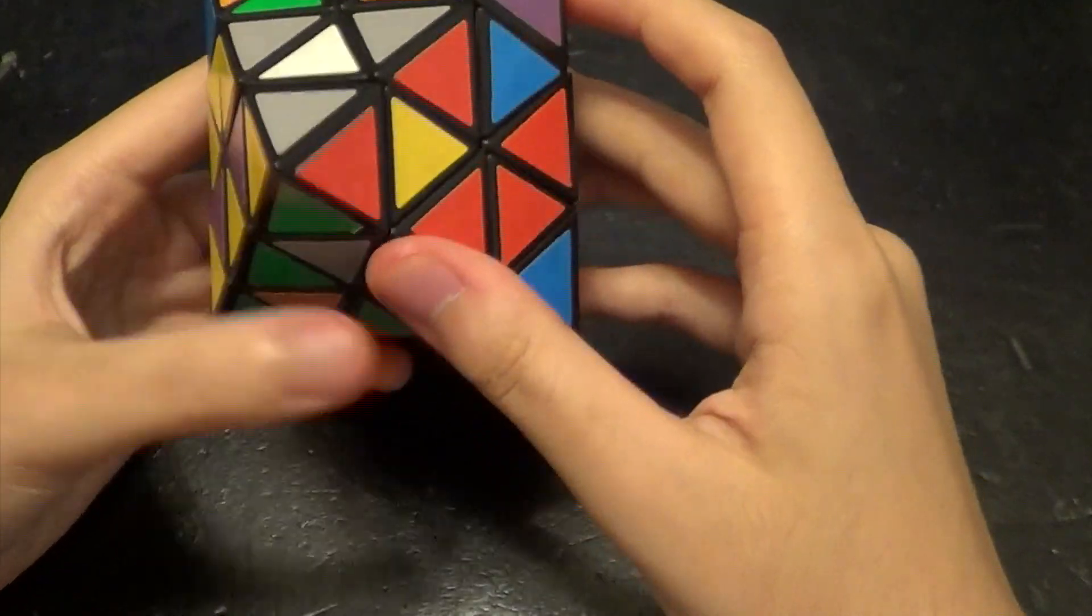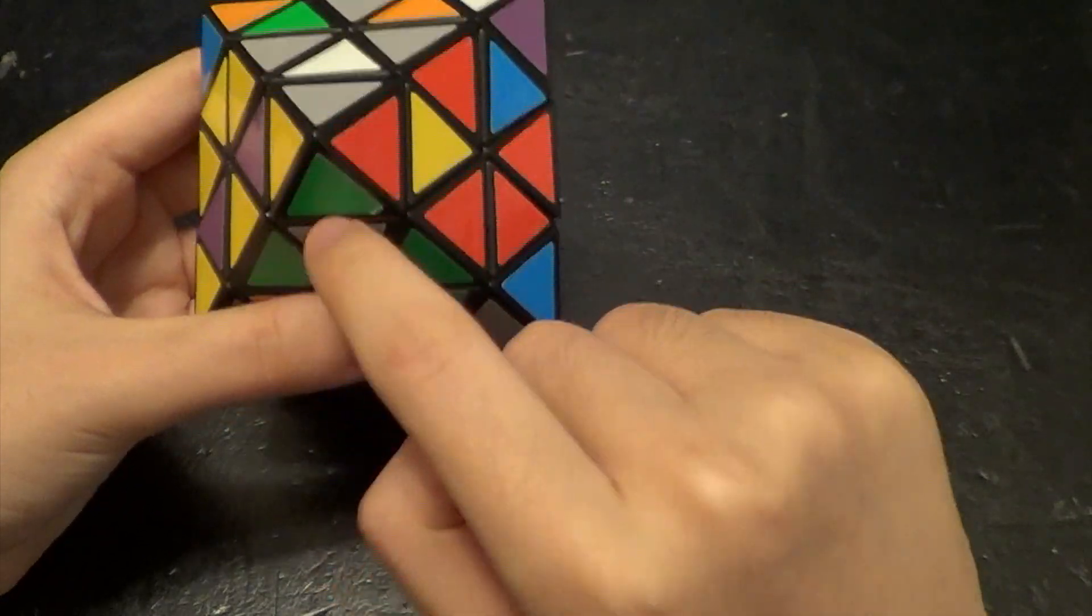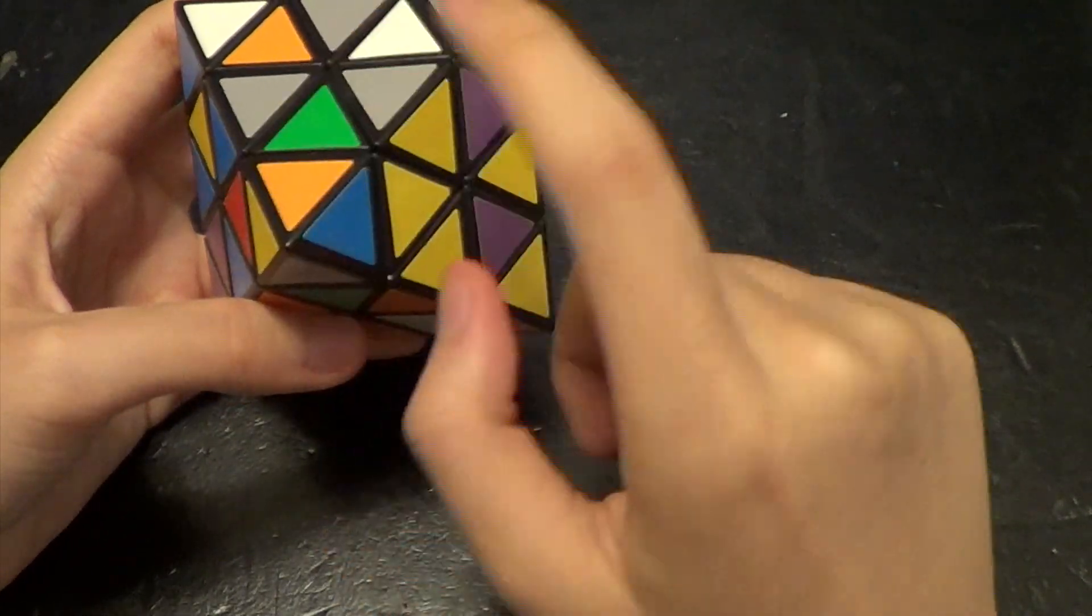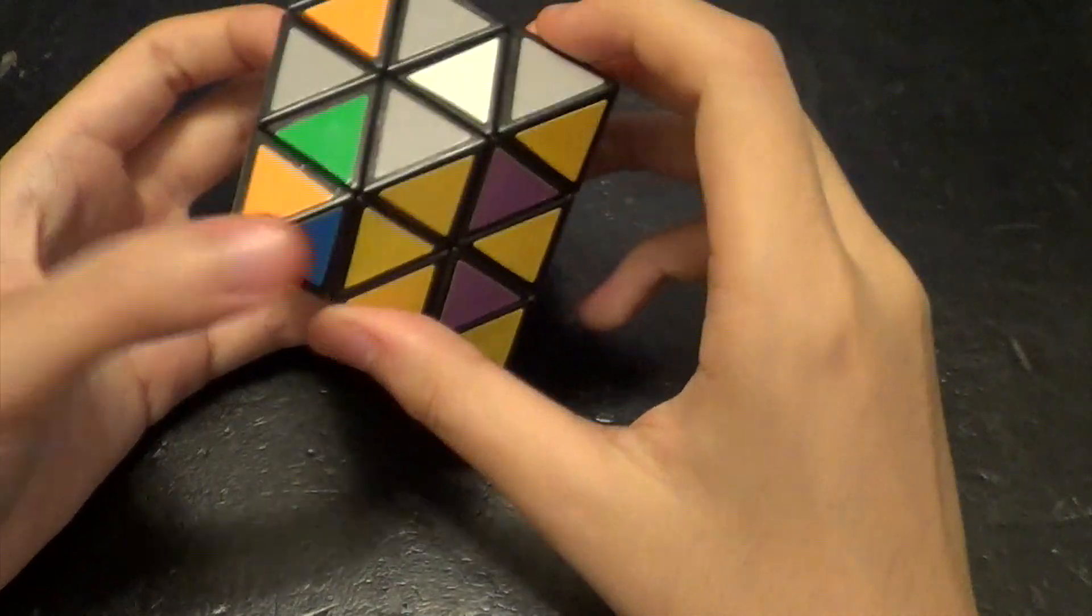So now we can see that the grey, yellow, green, and red is in the correct position, and the grey, yellow, blue, orange is in the correct position.